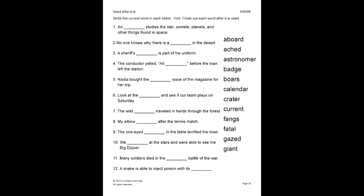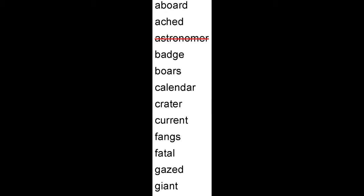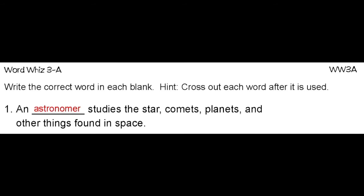Here, the student will write the correct word in each blank. Cross out each word after it is used. Let's do number one together. An blank studies the stars, comets, planets, and other things found in space. Since we know astronomer best fits here, we will look at the word bank, cross out astronomer, and neatly write it on the provided line.